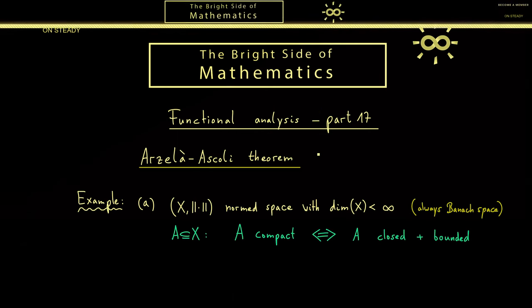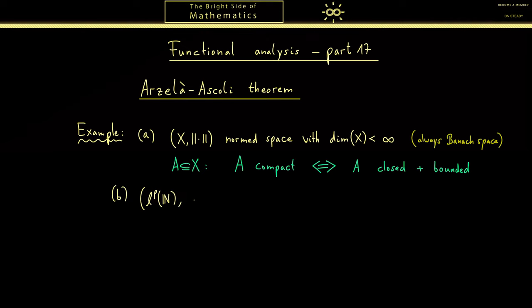So let's look at such an example. I choose the l^p space with the p norm for p less than infinity. There we also have learned this is a Banach space. Now let's look at the closed unit ball in l^p.